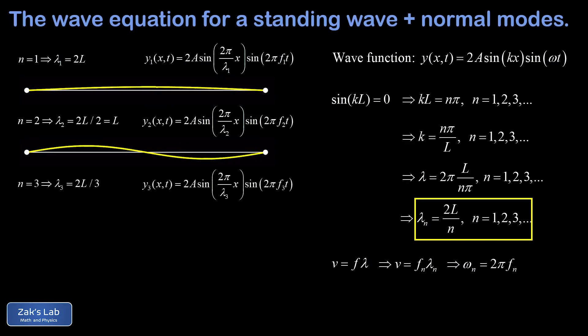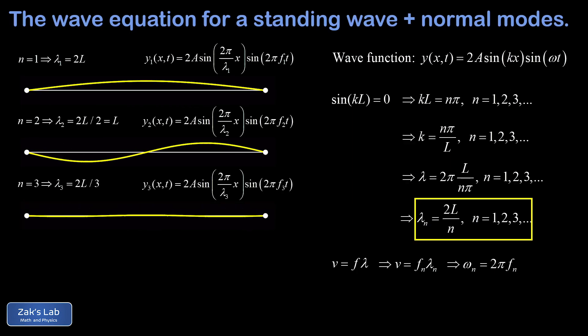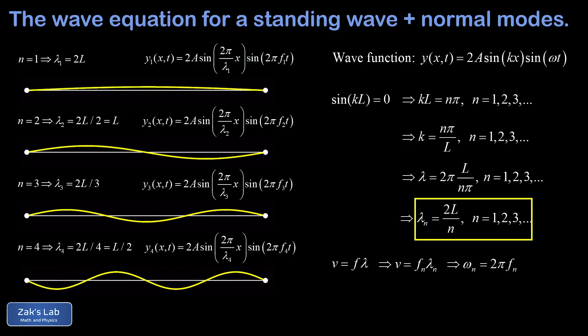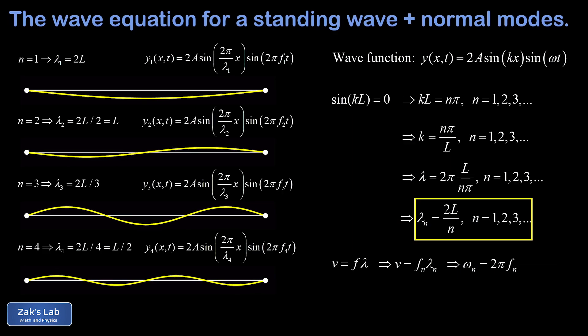Subbing in n = 3, we find a wavelength of 2L over 3, and here's what that one looks like. And finally, subbing in n = 4, we get a wavelength of 2L over 4, in other words L/2. So we get a complete wave every half length of the string. Another way to say that is that two waves will fit on the string.